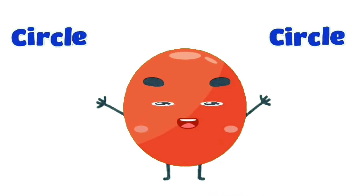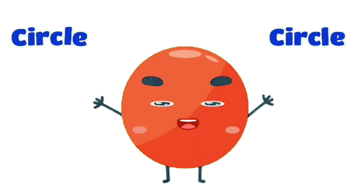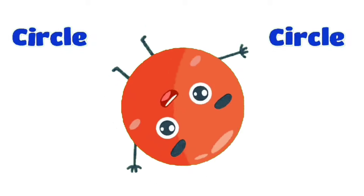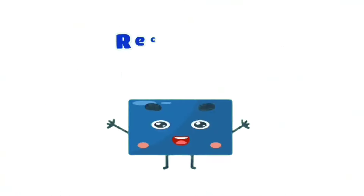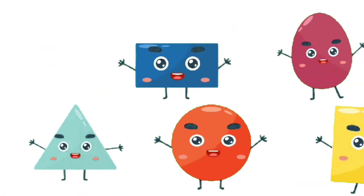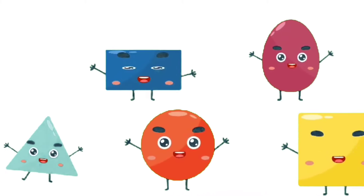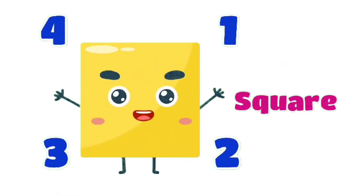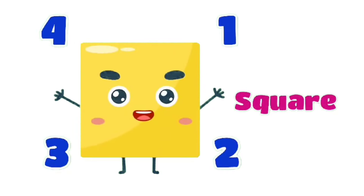Xylophone. Round and round, round and round. I'm a circle round and round, and round and round I am. Triangle, rectangle, circle, oval, square. Triangle, rectangle, circle, oval, square. I'm a four-sided square, shaped like a box. I'm a four-sided square, shaped like a box.